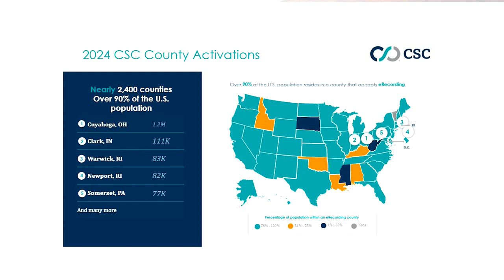Over 90% of the U.S. population lives in areas where eRecording is active. CSC currently has nearly 2,400 counties in our network. Some of the notable counties added this year were Cuyahoga County, Ohio (population 1.2 million), Clark, Indiana (111,000 people), Warwick and Newport, Rhode Island, and Somerset, Pennsylvania. As you can see on the map on the right, 76 to 100% of the population reside within an eRecording county, with a majority of states color-coded teal, signifying the wide application of eRecording.